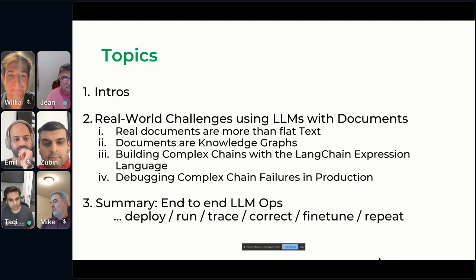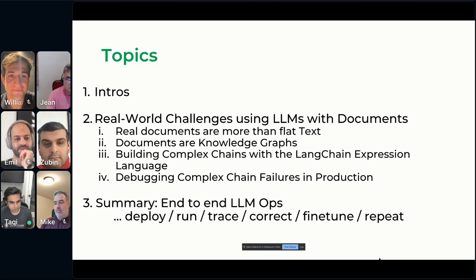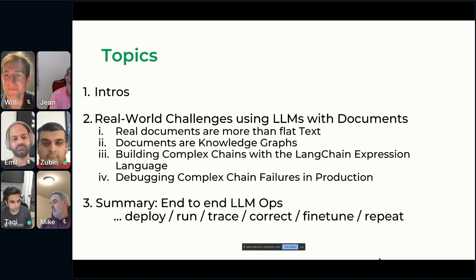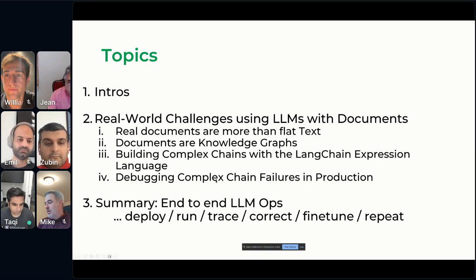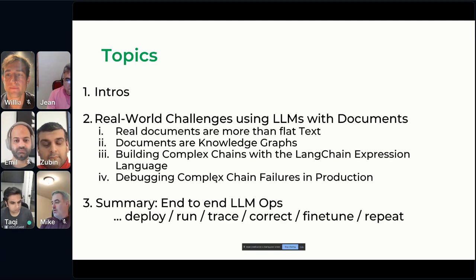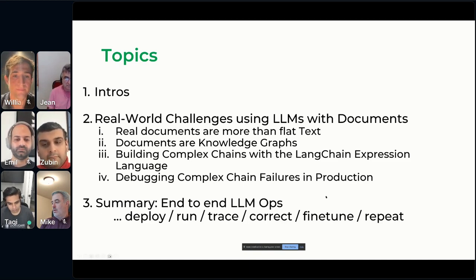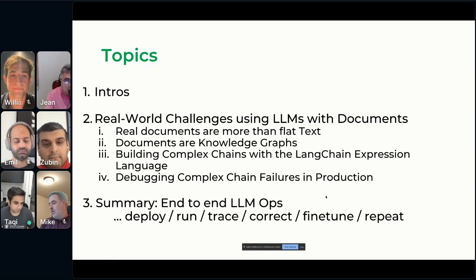We only have around 20 minutes, so we're going to go pretty fast. Docugami is actually quite different from other systems, so we'll spend a little bit of time explaining as we go. We have a lot of code to share as well — we'll start with explanations and then jump into code. We're going to talk about four real-life challenges, and we'll summarize at the end how we do end-to-end LLM ops with our language models in production.